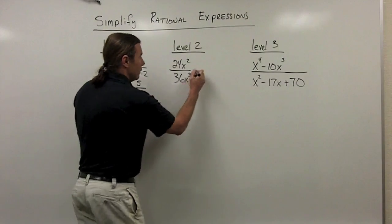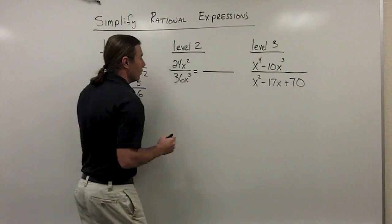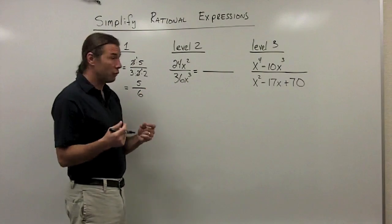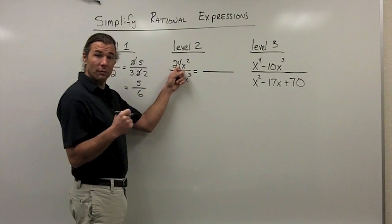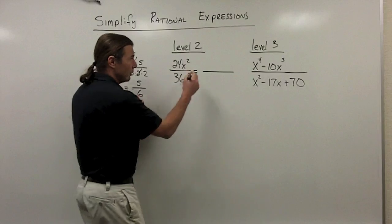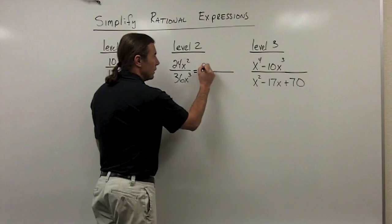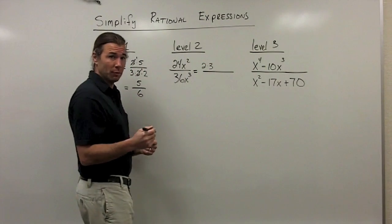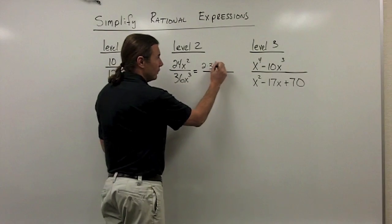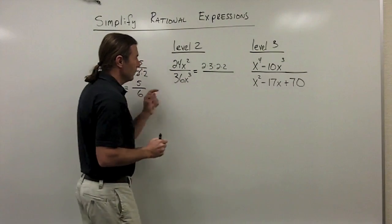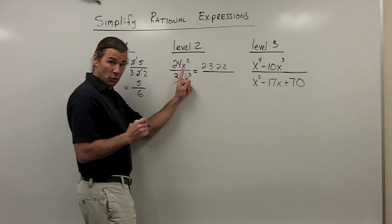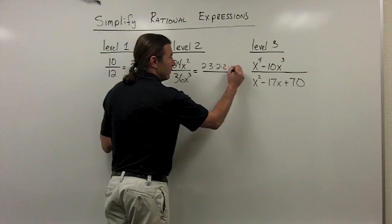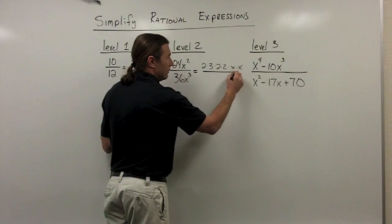Let's take a look at level 2. I'm going to go through and factor all of these things out. With 24, I'm thinking 6 times 4. Well, 6 isn't prime, so I'm going to write 6 as 2 times 3. And 4 is also not prime, so I'm going to write 4 as 2 times 2. I have x squared up here, which really just means x times x, so I'm going to write that out.